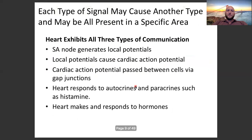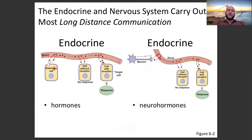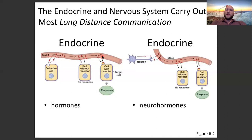Hormones are molecules produced in one part of your body that are released into the circulatory system and bind onto receptors of distant cells to send signals. Neurohormones are essentially the same thing, but they originate from your nervous system. They are molecules produced by a neuron, released into the bloodstream, and flow to send a signal to a distant cell.